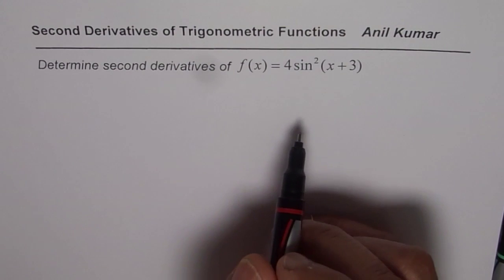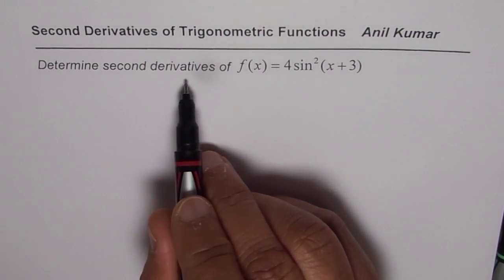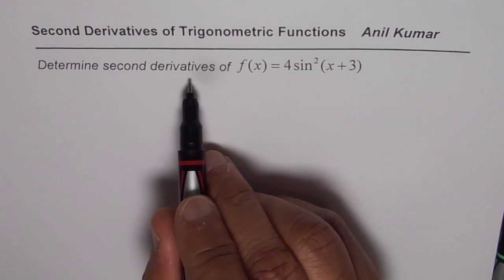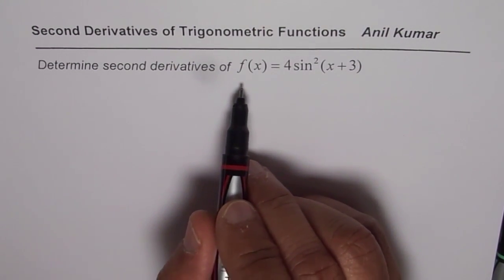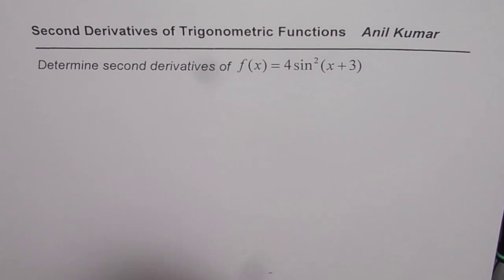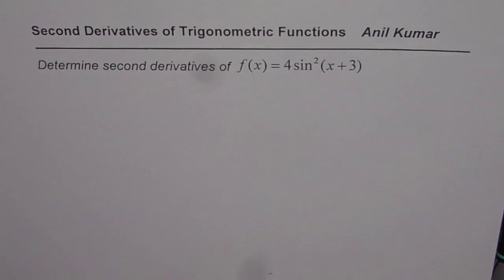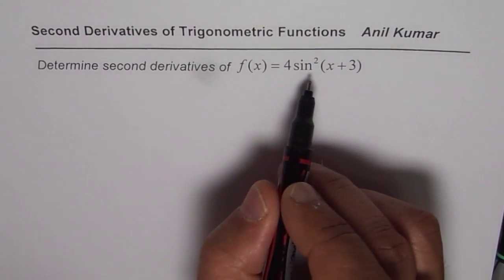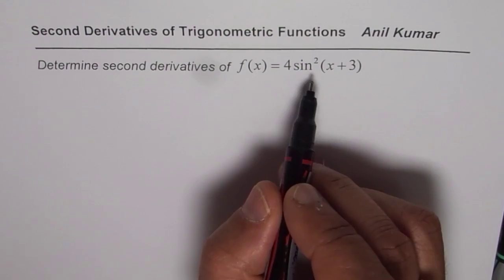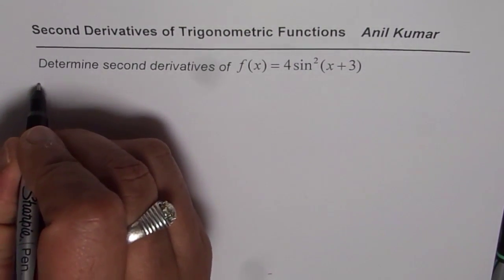Whenever you want to find the second derivative, it is important to find the first derivative, simplify it, and then go for the second derivative. To simplify expressions with sine and cosine, you might need to recall a few formulas — here are some.